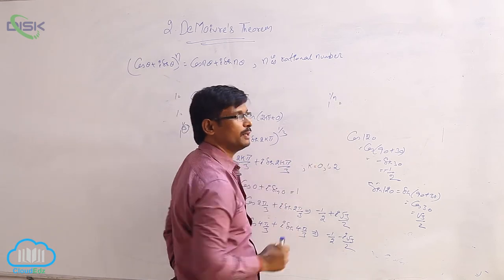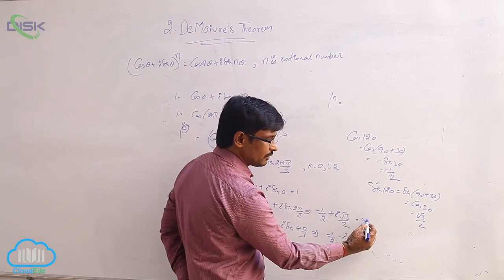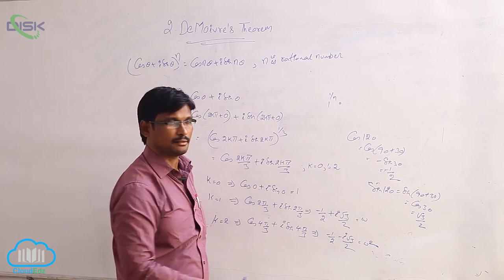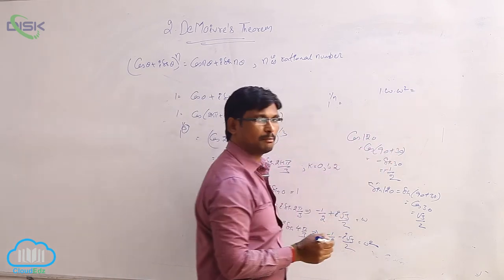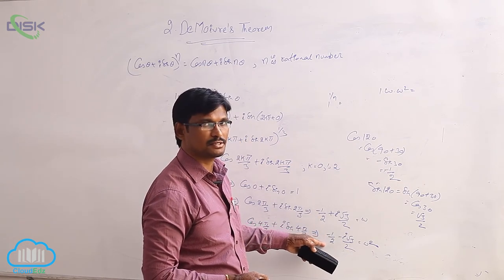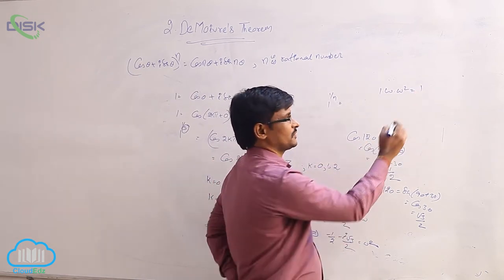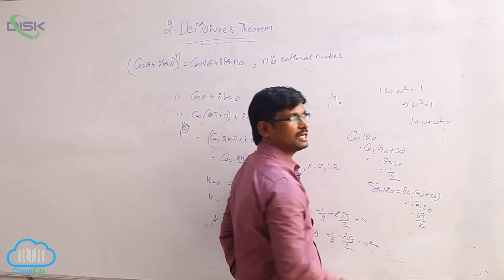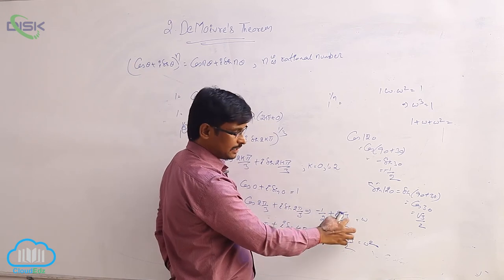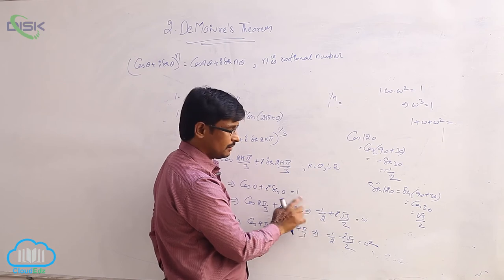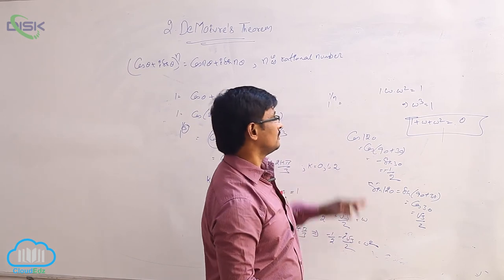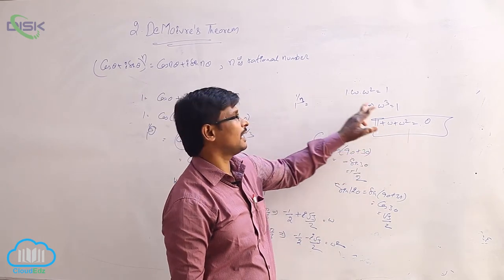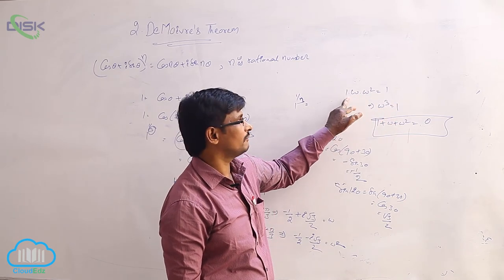For 1 to the power 1/n, there are totally n roots. The second root is denoted by omega and the third by omega square. If you multiply all three — 1 into omega into omega square — using the form (a+b)(a-b) = a squared minus b squared, you get 1, so omega cubed equals 1. The sum of these three roots — 1 plus omega plus omega squared — equals 0, since the imaginary parts cancel and minus 1/2 minus 1/2 plus 1 equals 0.